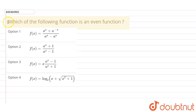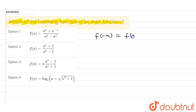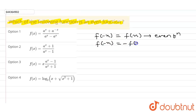Our question is: which of the following functions is an even function? Even functions are those for which f(−x) = f(x). And if f(−x) = −f(x), then the function is known as an odd function.